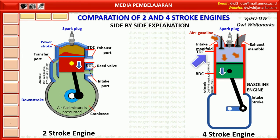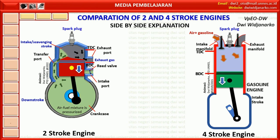As the piston continues to move down, in the 4 stroke engine the intake stroke continues and the pressure in the cylinder decreases, drawing the mixture of fuel and air into the cylinder. In the 2 stroke engine, the power stroke still takes place above the piston. The air and fuel mixture in the crankcase is compressed so that the pressure increases.